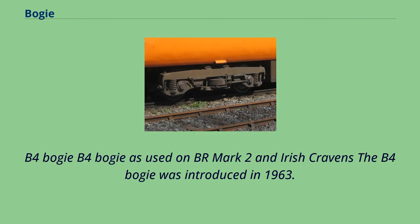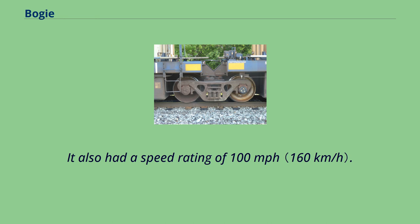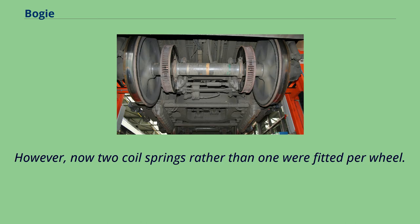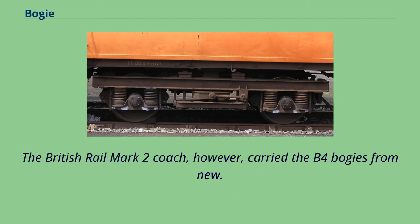The B4 bogey, used on BR Mark 2 and Irish Cravens, was introduced in 1963. It was a fabricated steel design — versus cast iron — and was lighter than the Commonwealth, weighing in at 5 long tons. It also had a speed rating of 100 miles per hour. Axle to spring connection was again fitted with roller bearings; however, now two coil springs rather than one were fitted per wheel. Only a very small number of Mark 1 stock was fitted with the B4 bogey from new, it being used on the Mark 1 only to replace worn BR1 bogeys.